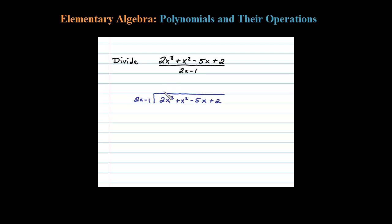The idea is to determine what times 2x will get me 2x cubed. In this particular case, I can see x squared should do it. x squared times 2x is 2x cubed and I match the first term.